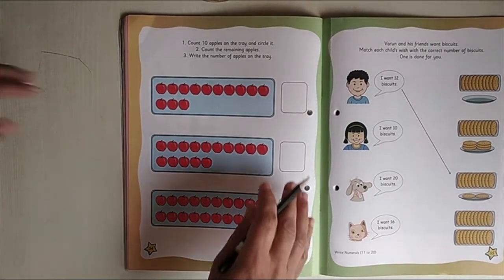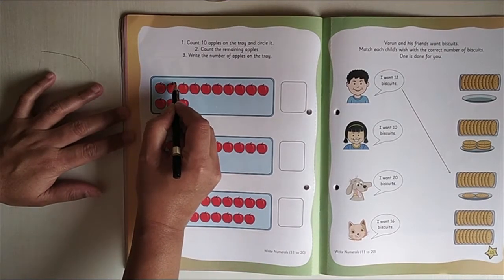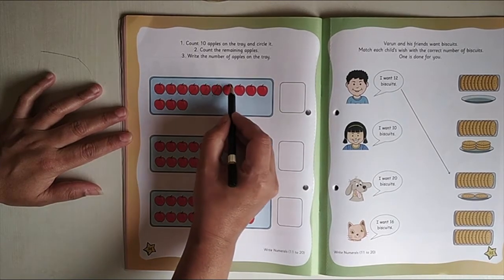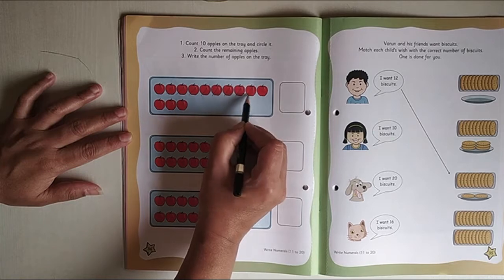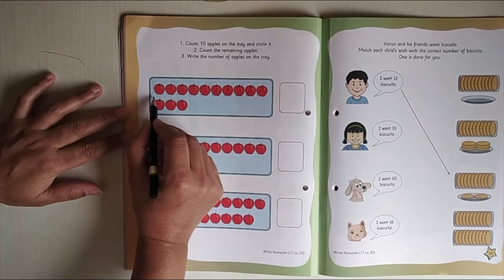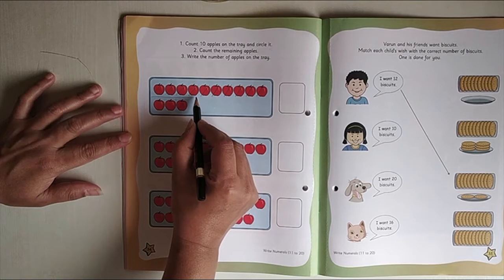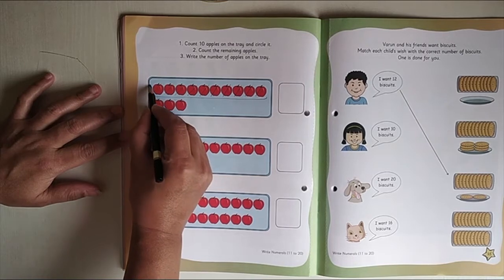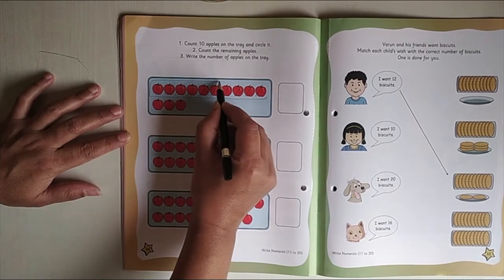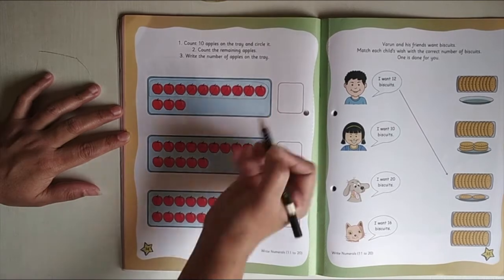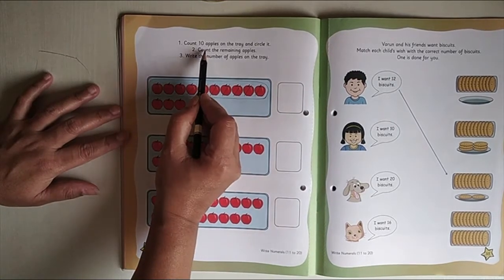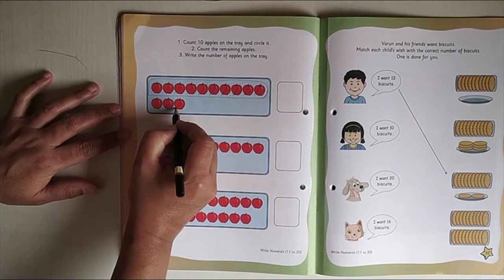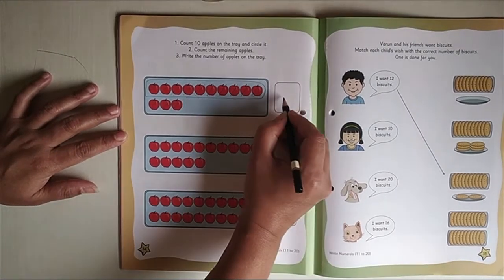So shall we first count? Now 1, 2, 3, 4, 5, 6, 7, 8, 9, 10. So we have to circle 10 apples. So we are going to circle 10 apples. Okay. So now what is the second instruction? Count the remaining apples. So we have 1, 2, 3 and where are we going to write over here?